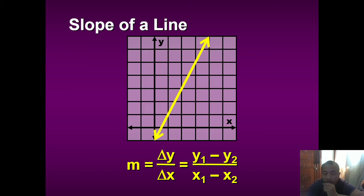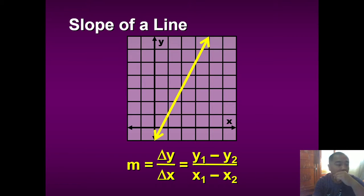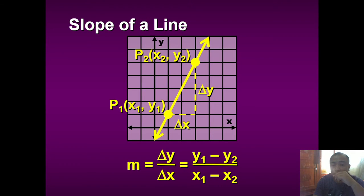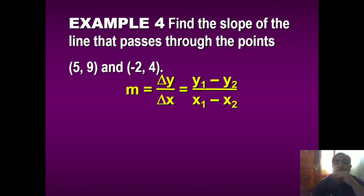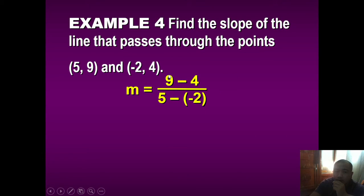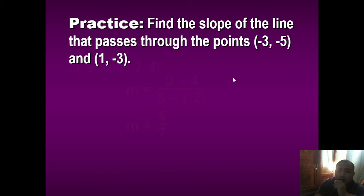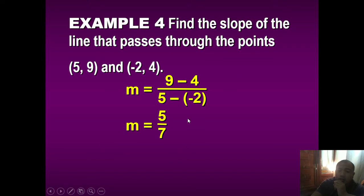To summarize the slope formula: it can be (y₁ - y₂) / (x₁ - x₂) or (y₂ - y₁) / (x₂ - x₁). For P₁ with coordinates (x₁, y₁) and P₂ with coordinates (x₂, y₂), you can also apply rise over run. Example: find the slope of the line that passes through (5, 9) and (-2, 4). We have (9 - 4) / (5 - (-2)) = 5/7. Using the other form: (4 - 9) / (-2 - 5) = -5 / -7, which also equals 5/7. Both formulas yield the same answer.